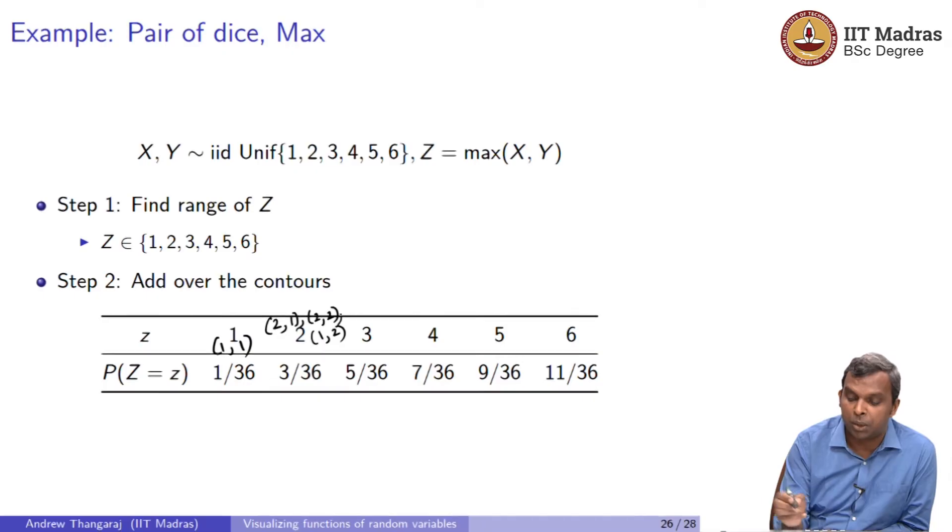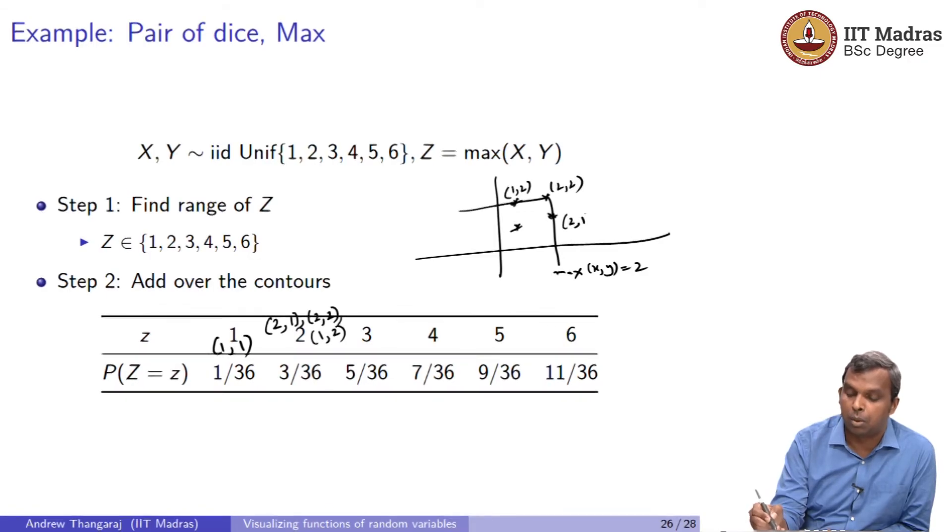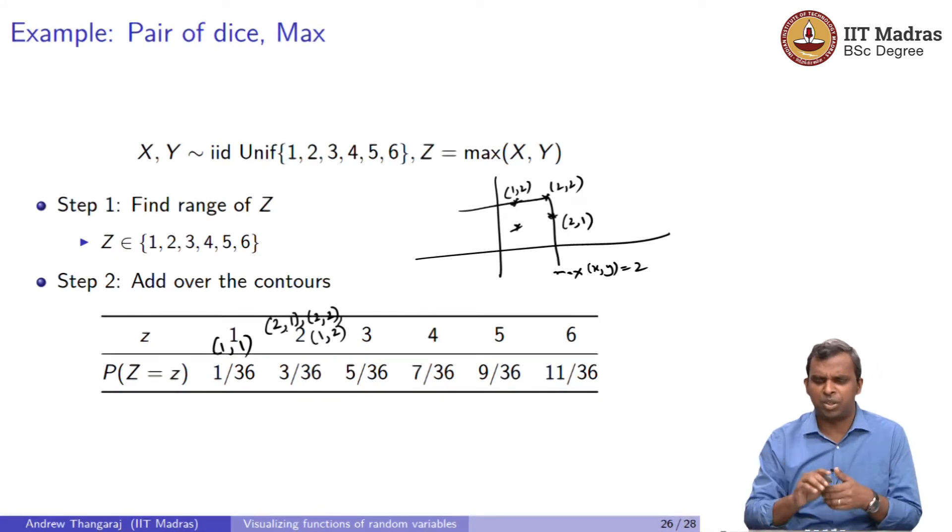You know 2 comma 1, 2 comma 2, and 1 comma 2. If you want to visualize this possibility, this is max equals 2. I got 1 comma 2, 2 comma 2, and 2 comma 1 as possibilities. So you see that 1 comma 2, 2 comma 2, 2 comma 1. This needs a little bit of visualization.